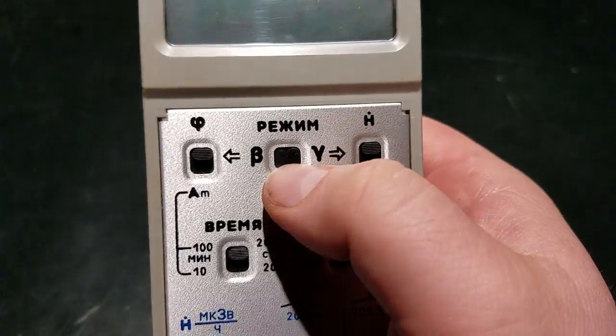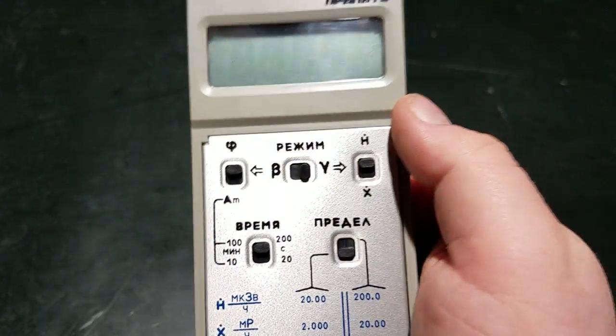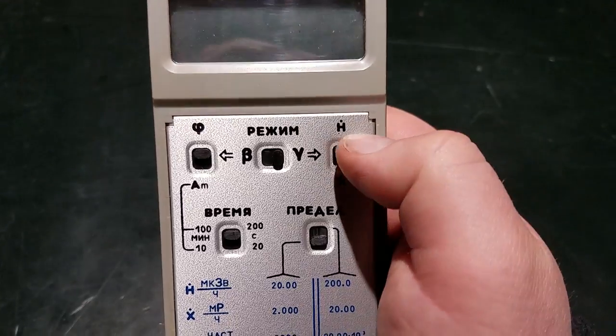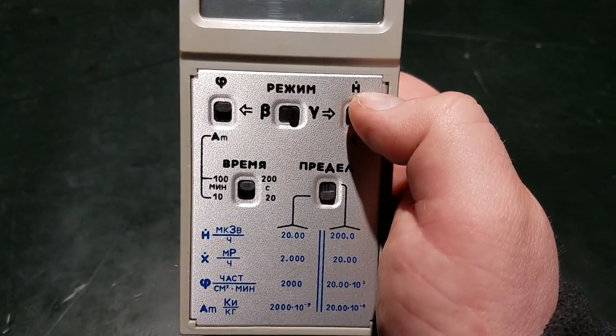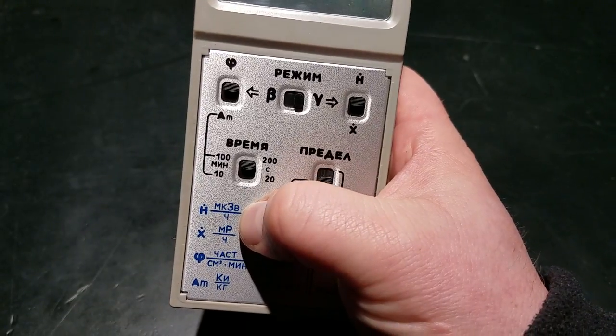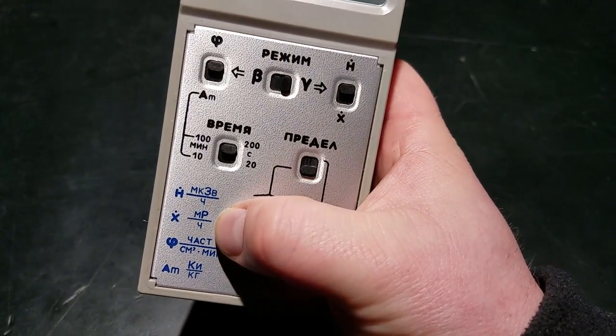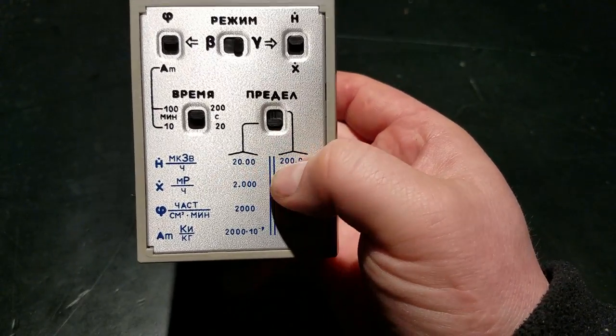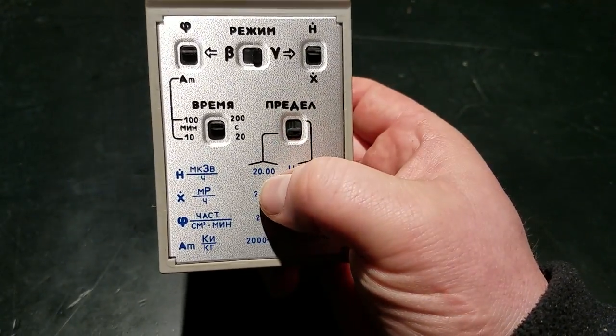I'll start with it in gamma mode just for fun. You have a switch, and this is Russian for regime, which kind of means mode. When it's on gamma mode, you can either have rates measured in microsieverts per hour or microroentgens per hour.